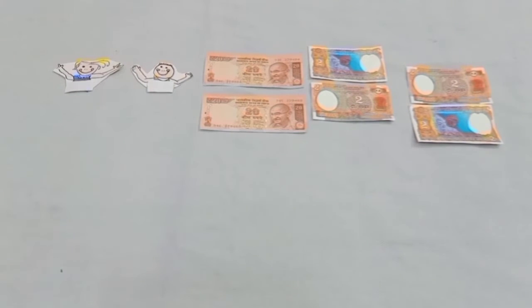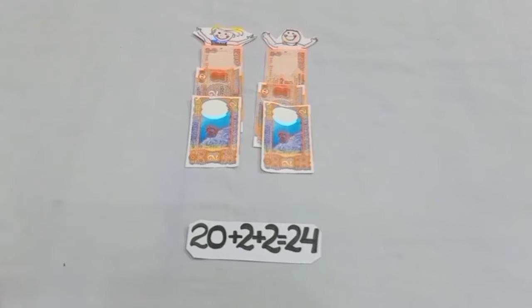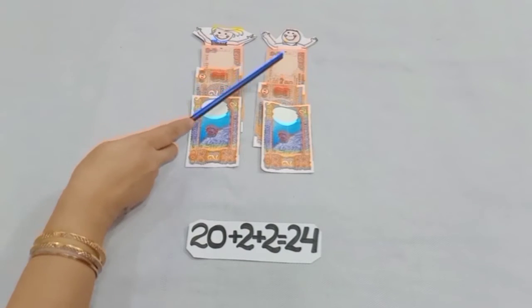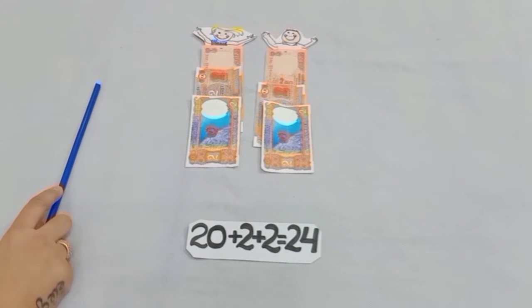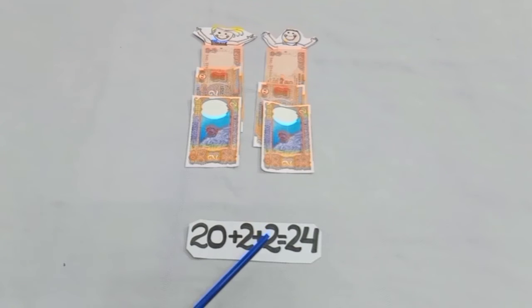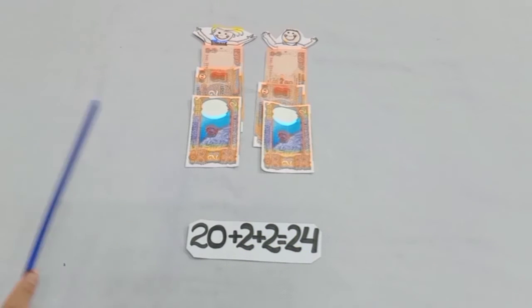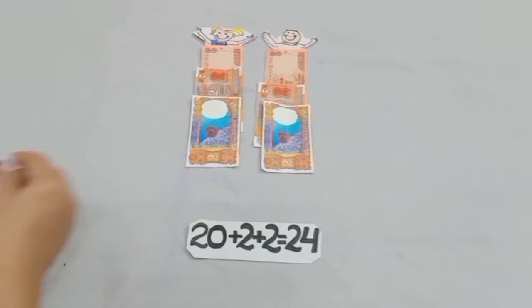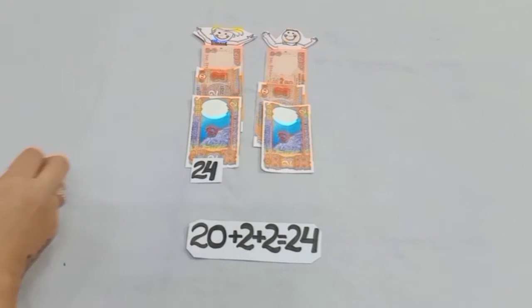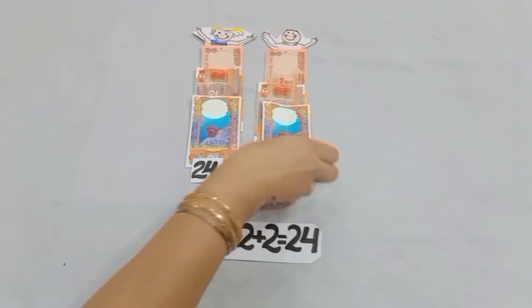After dividing rupees equally between two children, you can see each child got 20 plus 2 plus 2 is equal to 24, meaning 24 rupees.